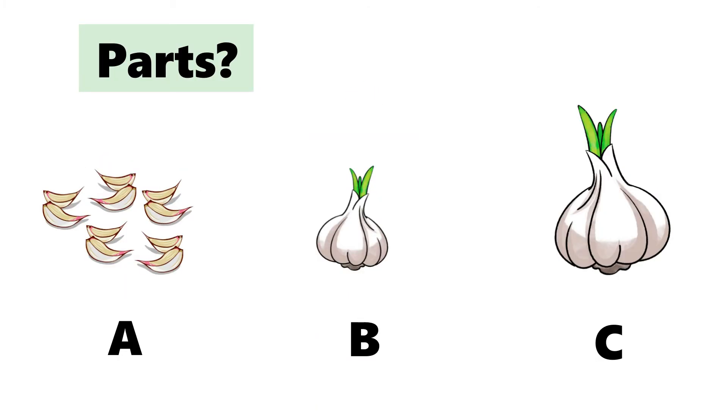Which are parts? A shows parts. They are parts of a garlic. B and C are different sizes, but they are both the entire piece of garlic. B and C are wholes.